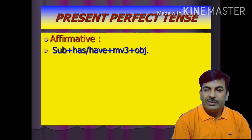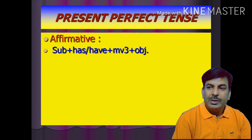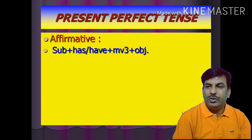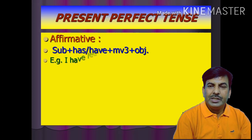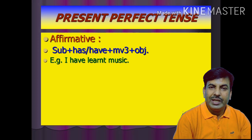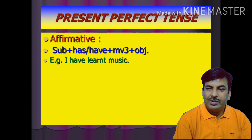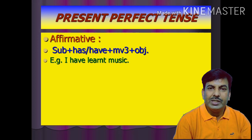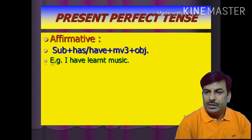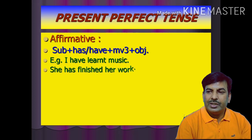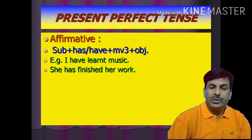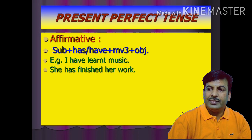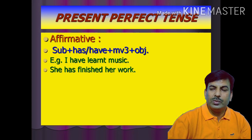Then comes the third form of the main verb — that is, the past participle — and finally the object. For example: 'I have learnt music' — here I is the subject, have is the helping verb, learnt is the past participle, and music is the object. Another example: 'She has finished her work' — she is a singular subject, so has is used, finished is the past participle, and her work is the object.